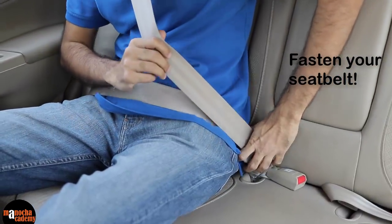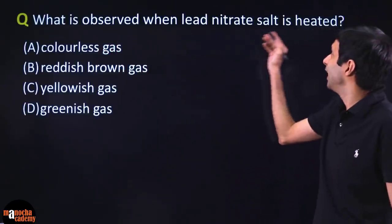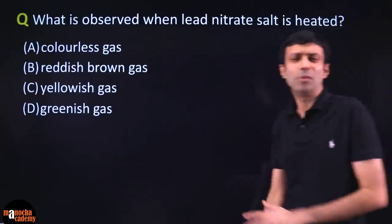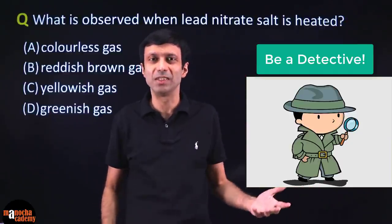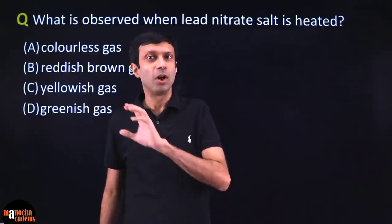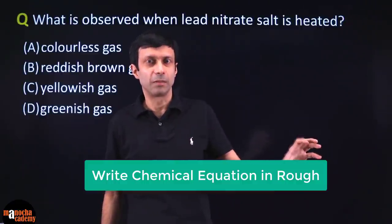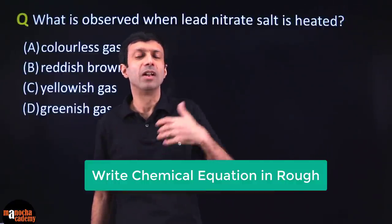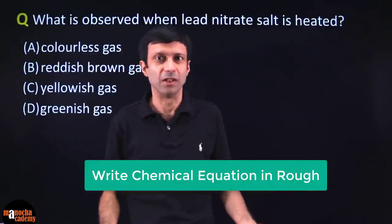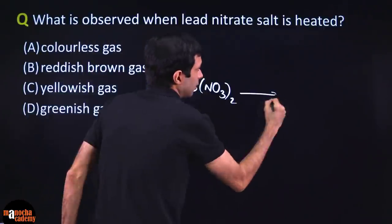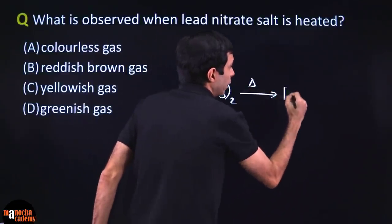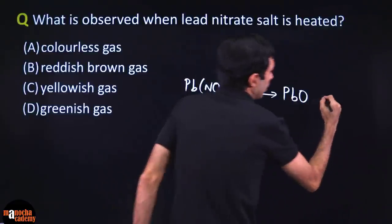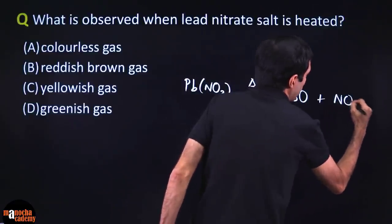Alright, fasten your seatbelts and let's get started. What is observed when lead nitrate salt is heated? Chemistry exam is like a detective exam where you have to predict the colors, the observations, and to save time, quickly think of the reaction. Because once you know the products, you can easily predict the observation. So when lead nitrate salt is heated, we are going to get lead oxide, nitrogen dioxide, and oxygen.